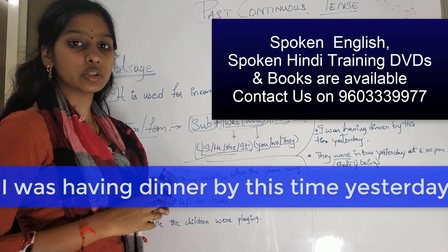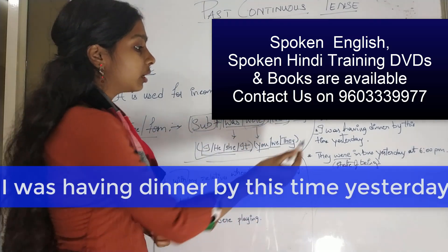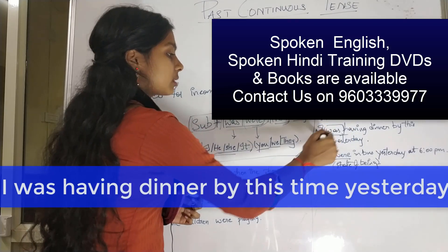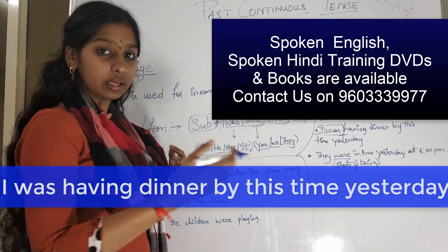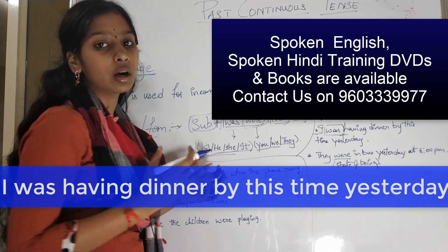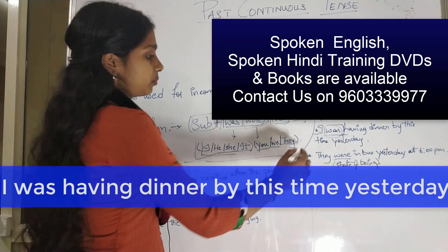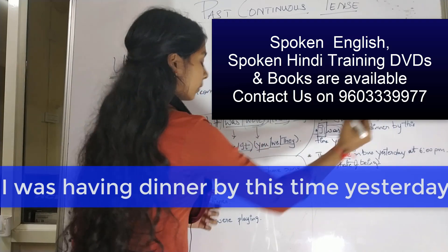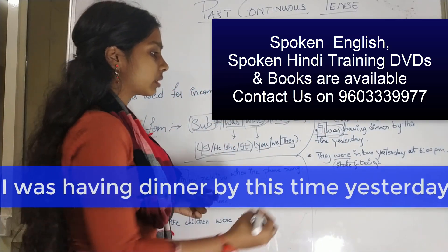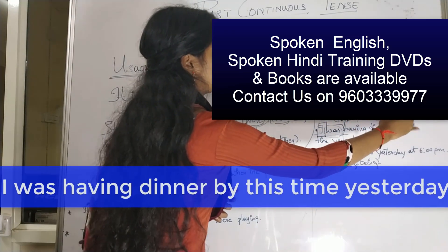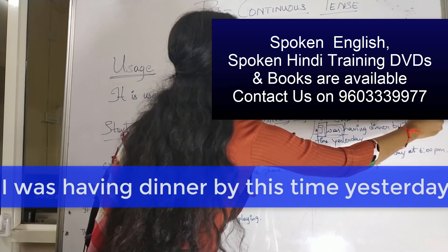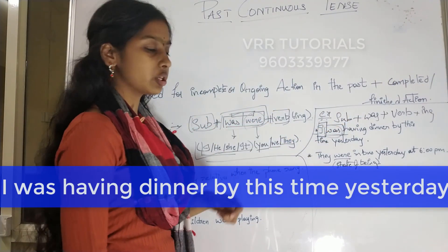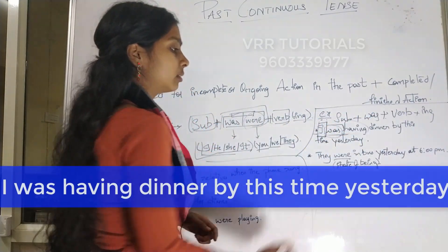So, 'was' indicates state of being. I was having dinner by this time yesterday. Subject 'I', plus 'was' as helping verb, plus 'having' — that is verb with -ing. When the subject is 'I', we use 'was' in past continuous tense. So: subject plus was, plus verb — that is 'have' plus -ing.